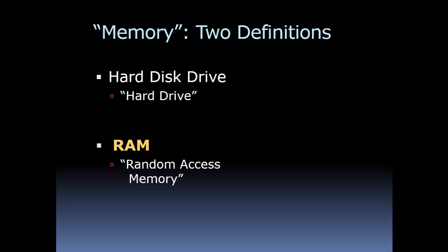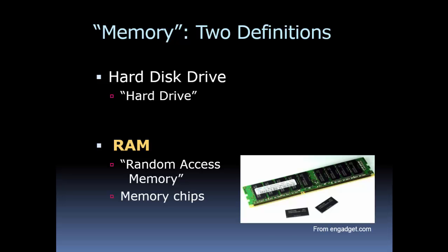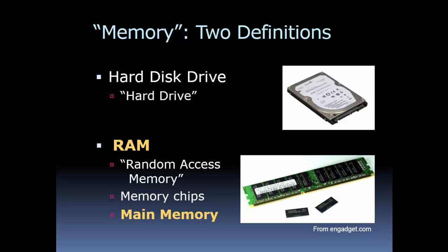RAM is random access memory. Basically, all memory is random access. There used to be a thing called sequential access memory, but now all memory is random access — it means we can jump to any point in the memory at any time. RAM is composed of memory chips, little tiny chips that are soldered onto a little plastic green circuit board. They're very fast, and kind of expensive. Maybe instead of RAM, let's call it main memory — it's probably a better term.